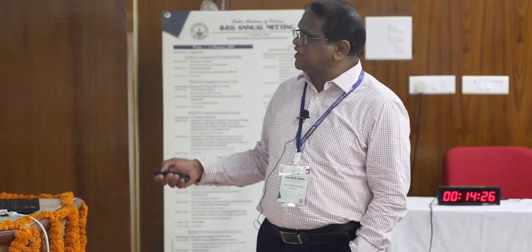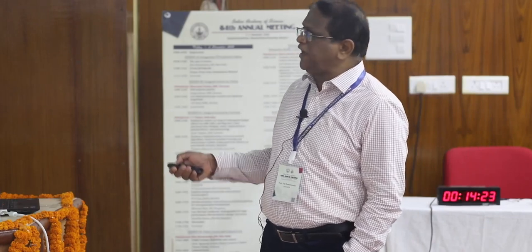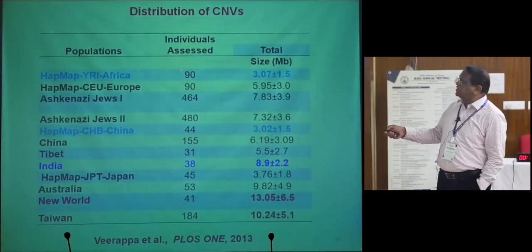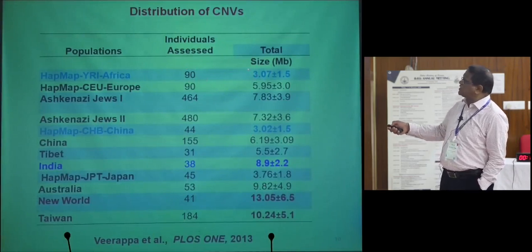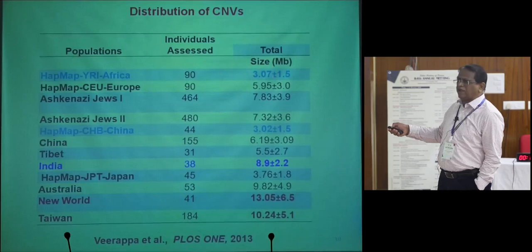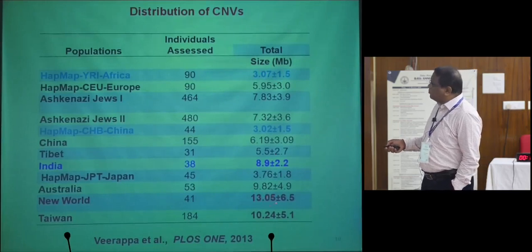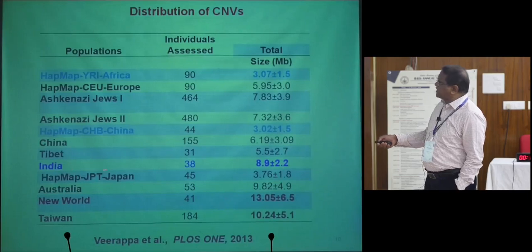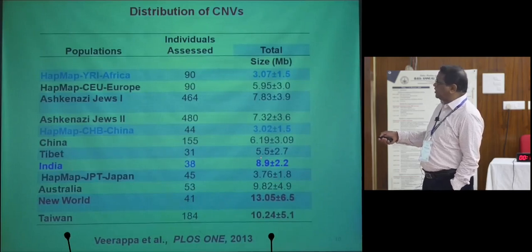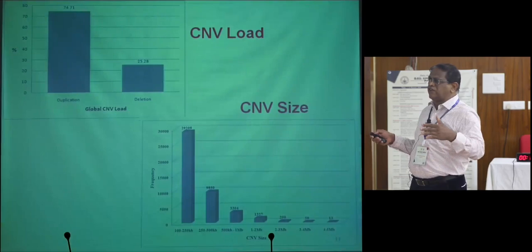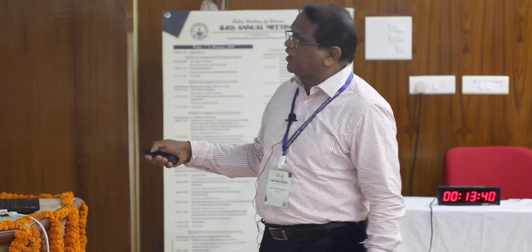With that data across all 12 populations of 1,715 individuals, looking at total genome size variations, we found less in the African population — out of 90 individuals analyzed, there is about 3 MB of sequence variation — whereas in the new world population there is about 13 MB of copy number variation, and in our lab's limited 38 individuals about 8.9 MB. The range is 3 to 13 MB, and duplications were more dominant compared to deletions — about 70 percent of variations were duplicated genome.